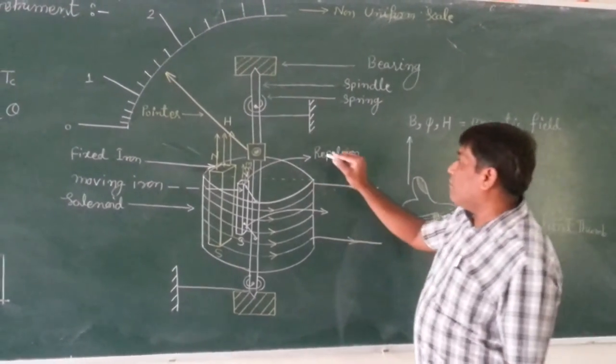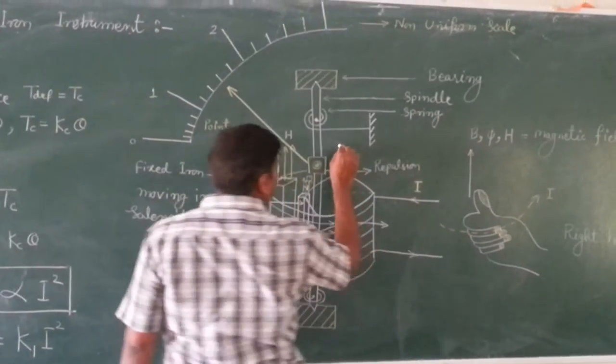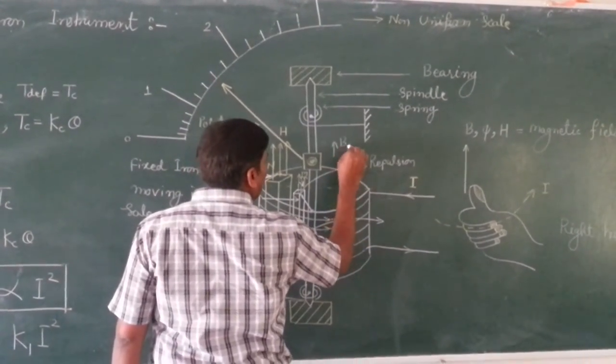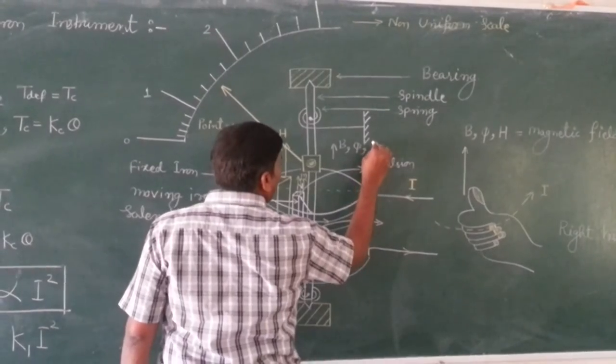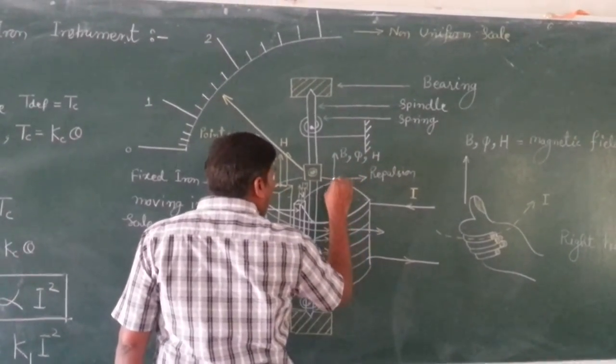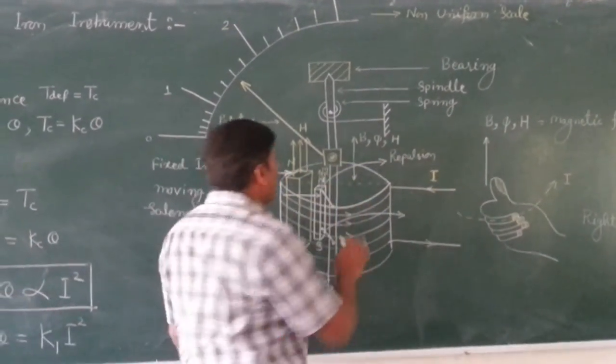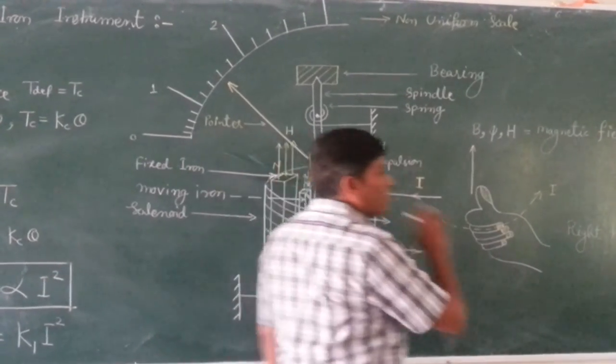This magnetism may be explained by say B, phi, or H. All are indicating the magnetic strength.